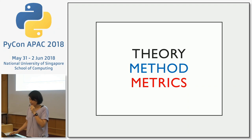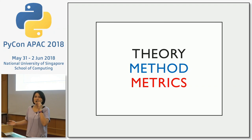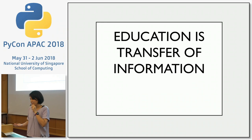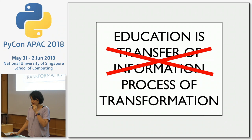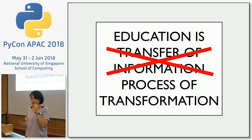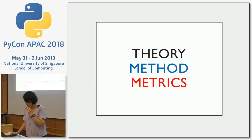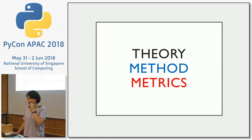The theory I finally arrived at after teaching for a while — and Prof Ben Leong spotted this — is that education is not merely a transfer of information. Education is actually a process of transformation. So what does that mean for coding and computational thinking education?